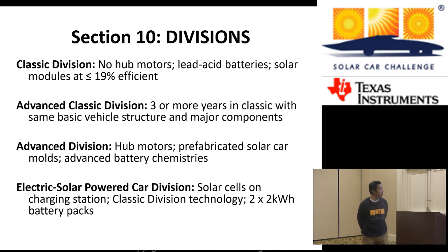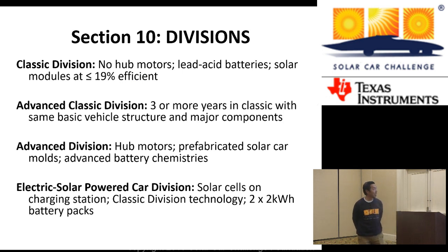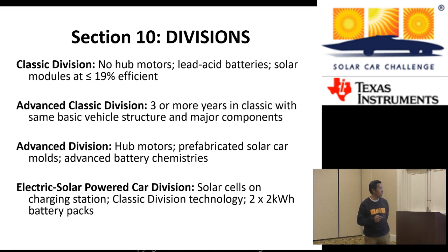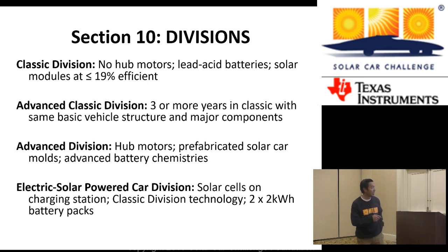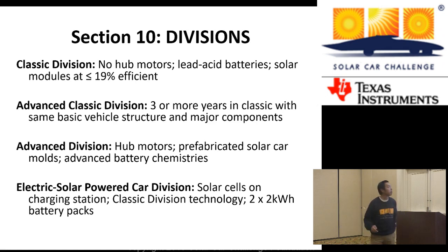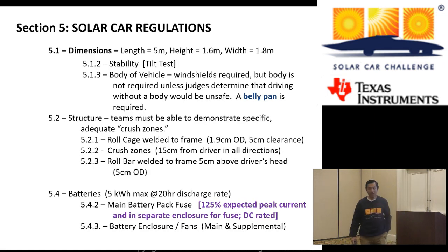Let's talk about divisions: Classic Division, Advanced Classic, Advanced Division, and Electric Solar. The Advanced Classic is three or more years that you've participated in the Solar Car Challenge. The clause about basic vehicle structure and major components have been stricken or will be stricken. From there, let's get into the body of the rules.